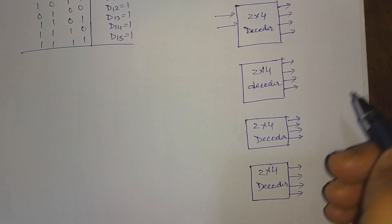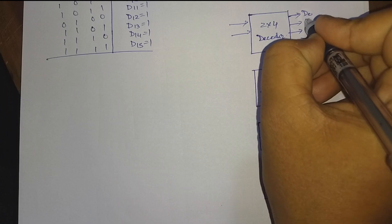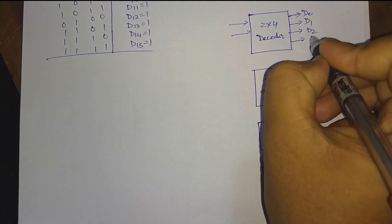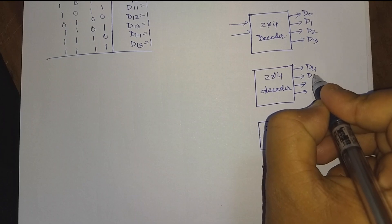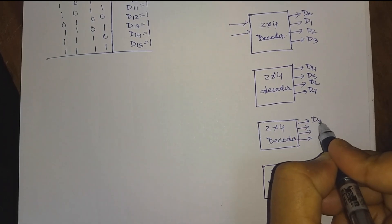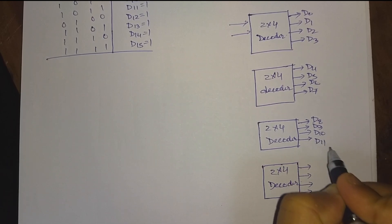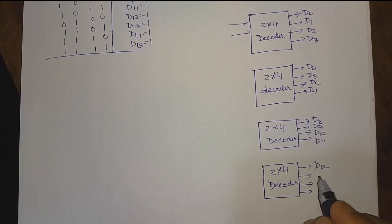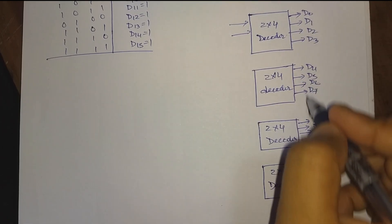We have to arrange this circuit so that the outputs start from D0, D1, D2, D3, D4, D5, D6, D7, D8, D9, D10, D11, D12, D13, D14, D15. So these are the output lines.